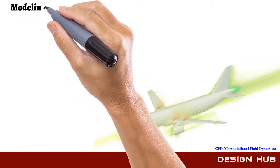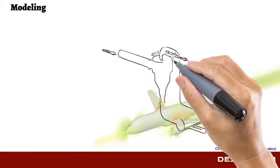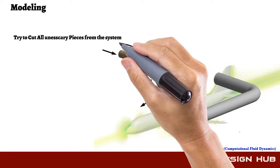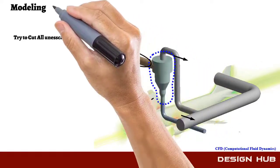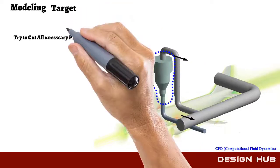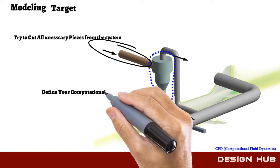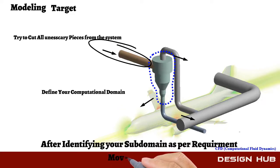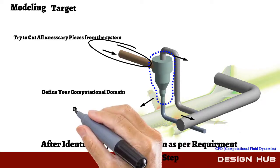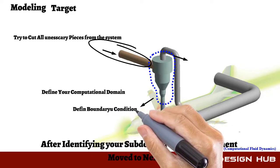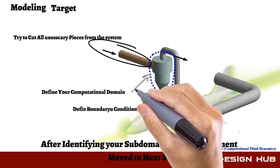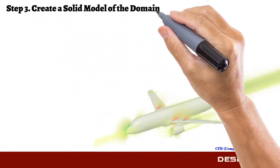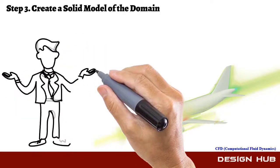In modeling, we need to identify subdomains, which will reduce calculation time. Then generate the subdomain — this can be a multi-part solid model of the domain.